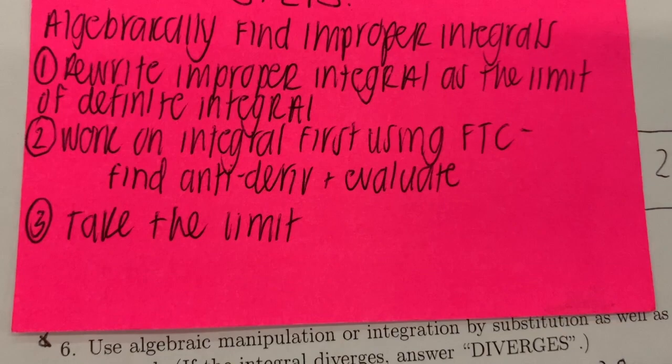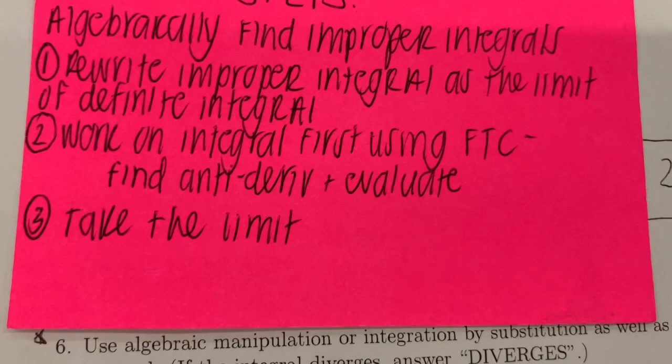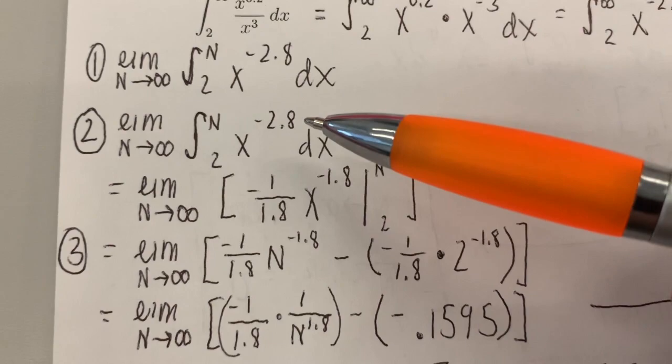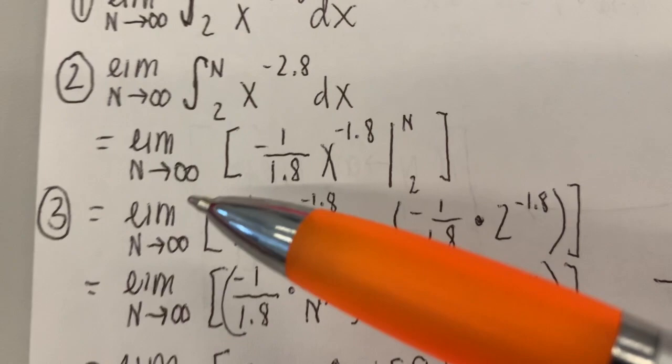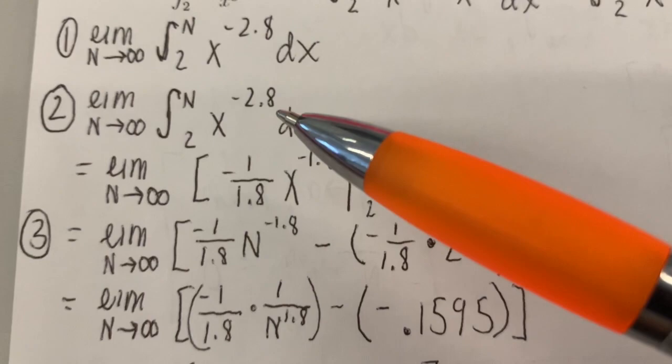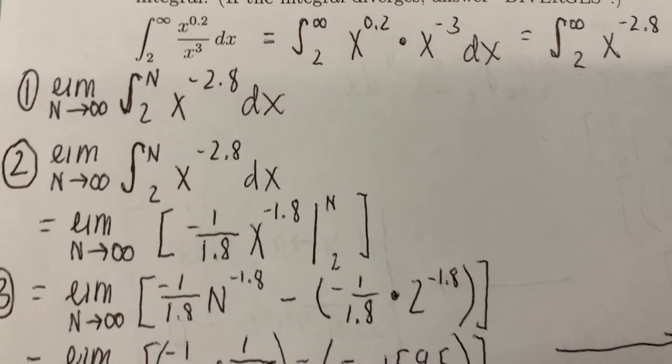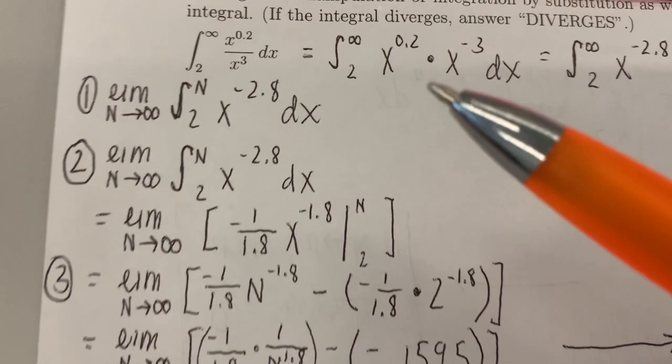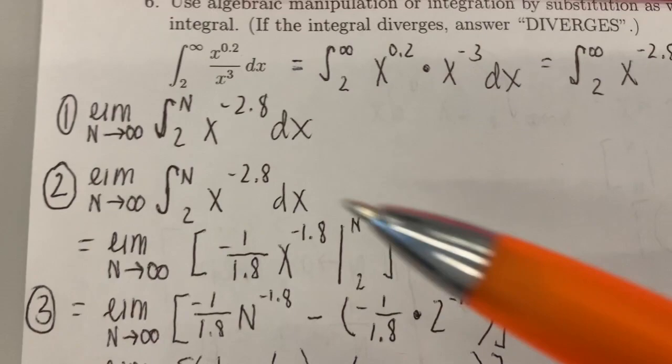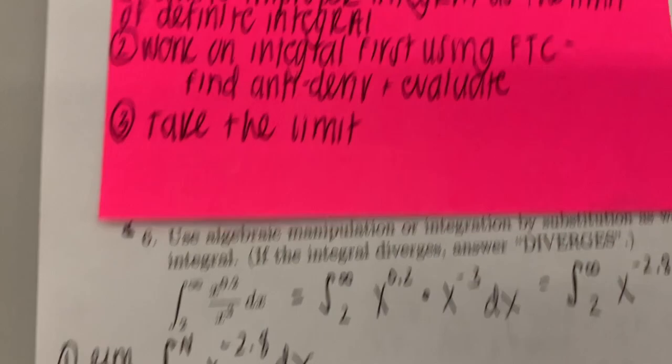Step 2, work on the integral using the fundamental theorem of calculus — find the antiderivative and evaluate. We find the antiderivative of x to the negative 2.8 by adding 1 to the power: that gives x to the negative 1.8. Bring the exponent out front as 1 over negative 1.8, giving negative 1 over 1.8 times x to the negative 1.8, evaluated from 2 to n.